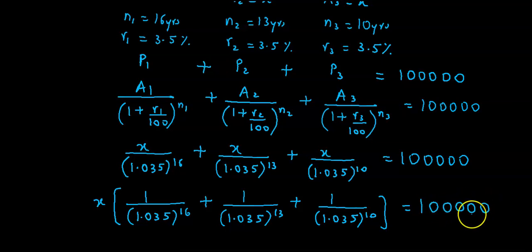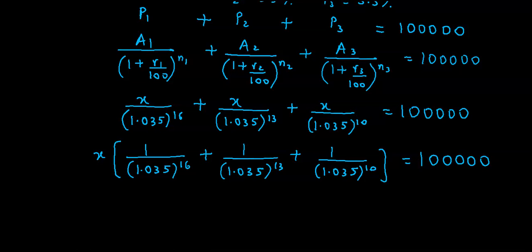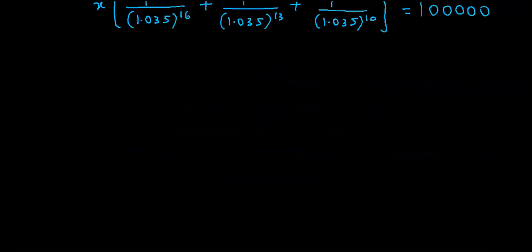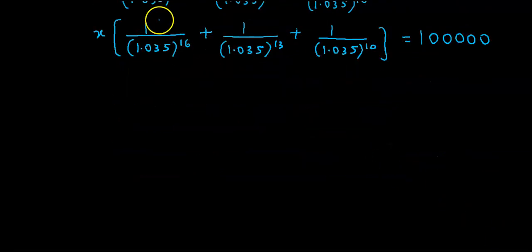Now we calculate this using calculator using the M plus function. So 1.035, this 16 times, and then its reciprocal, so divide equals. Now this value goes to memory so M plus.